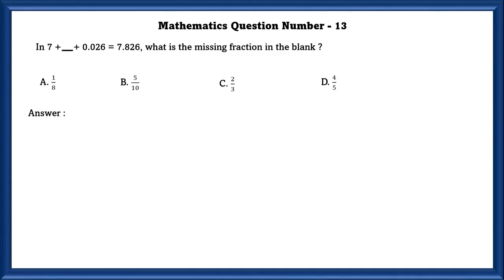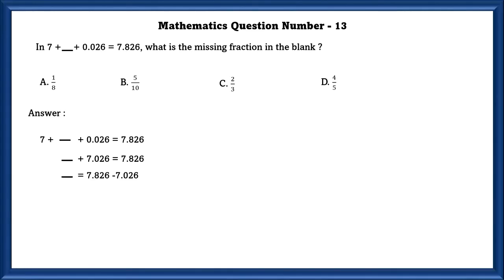Mathematics question number 13. In 7 + ___ + 0.026 = 7.826, what is the missing fraction? We simplify: ___ + 7.026 = 7.826, so the missing value = 7.826 − 7.026 = 0.8, which equals 8/10 or 4/5. The answer is option D.